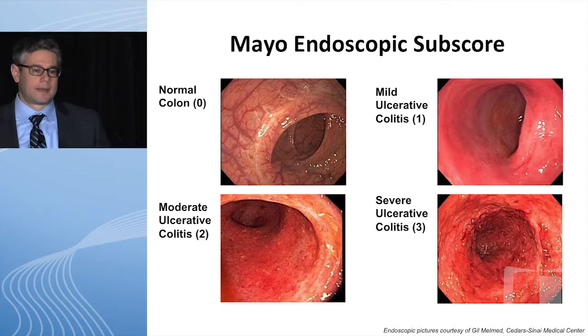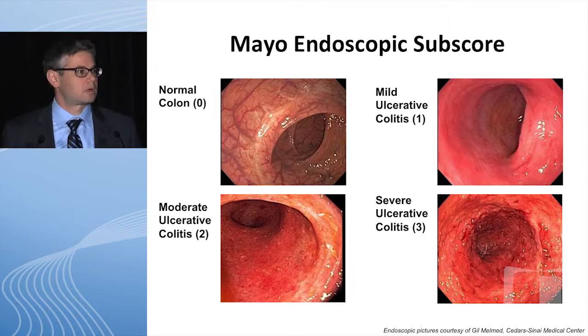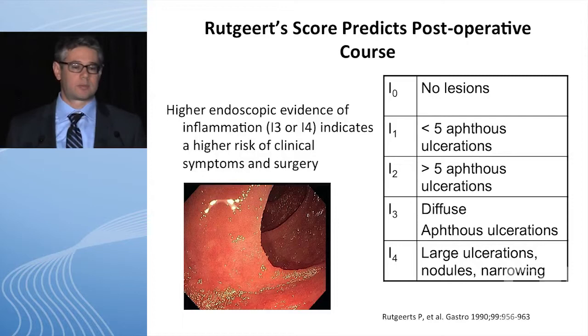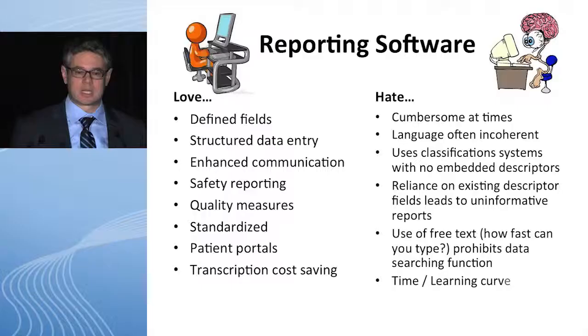For ulcerative colitis, there are many indices to assess the appearance of the colonic mucosa. One commonly used one is the Mayo endoscopic subscore — a simple zero through three scale going from a normal colon to mild, moderate, and severe ulcerative colitis. For patients with Crohn's disease who've had prior surgery, the Rutgeerts score helps understand the risk for recurrence by looking at what the anastomotic area looks like both in the anastomosis and slightly deeper into the ileum. This gives insight — really a crystal ball — into the future of that patient's prognosis and can help guide clinical decision-making for treatment at the time of that colonoscopy.